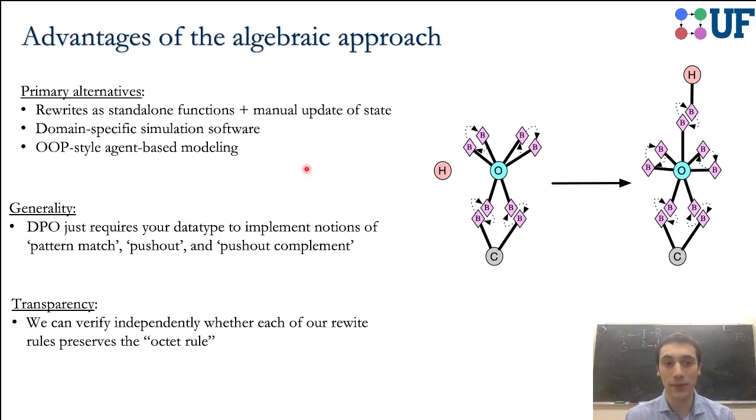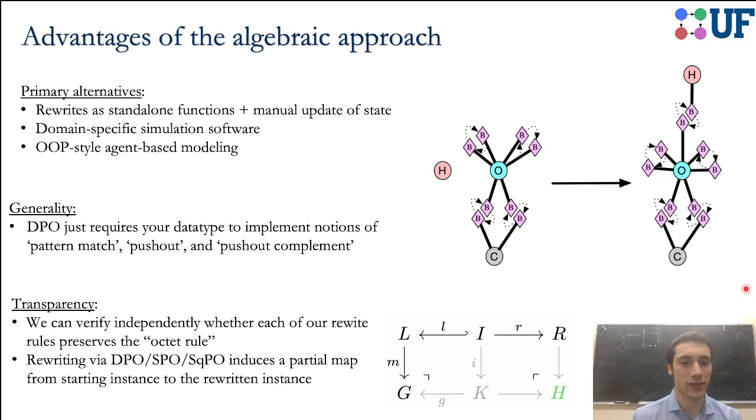There's also this transparency, which comes from having your algorithm as data rather than code, because let's say I notice something's going wrong, that I'm violating the octet rule, something has too many bonds. I can actually, in a very automated way, analyze my rewrite rules and see, oh, which one actually introduces too many bonds. This is a very different methodology from actually looking for bugs in code.